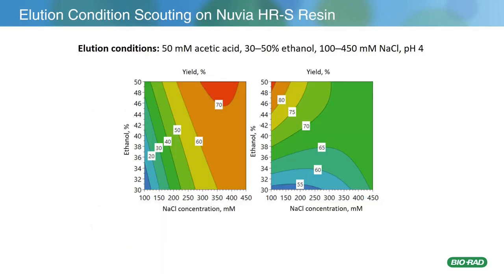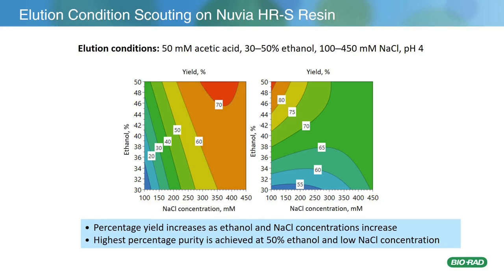For elution condition scouting, buffers were evaluated in the range of 30 to 50% ethanol and 100 to 450 millimolar sodium chloride in acetic acid buffer at pH 4. The yield of insulin increased with increasing ethanol percentages and increasing sodium chloride concentrations. The highest purity was achieved at 50% ethanol and low sodium chloride concentrations. To find a balance between high yield and purity, further elution optimization and verification was done with Nuvia-HRS in a column format.